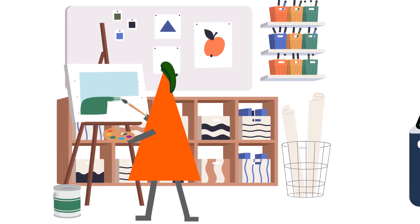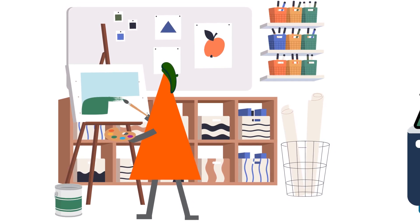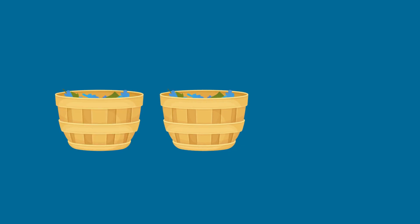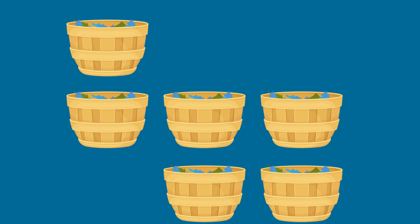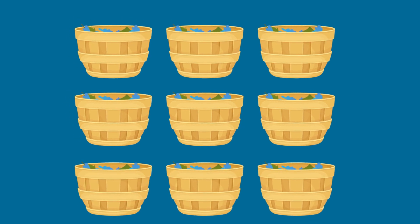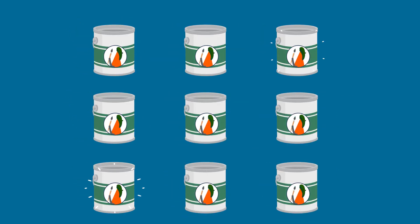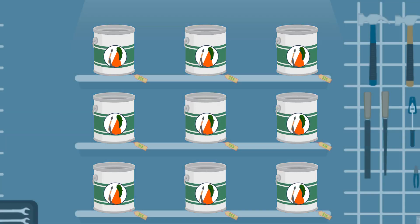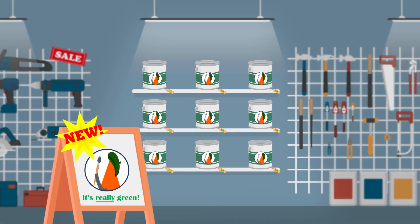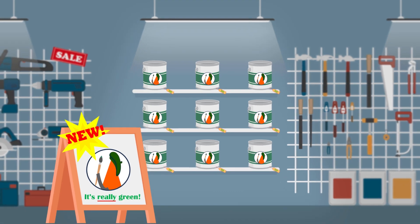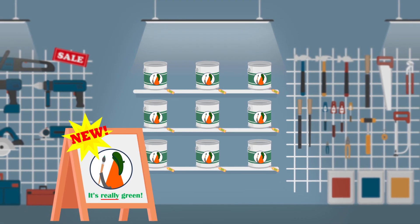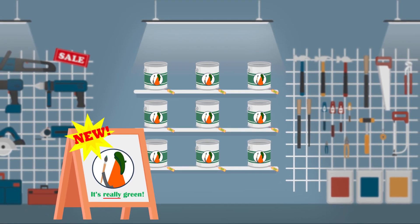With preparative chromatography, although you need more of the original sample up front, the output you receive is usable and the process is scalable. So when you decide to bring your brand new pigment to market, you'll be ready to separate without losing too much in the process.